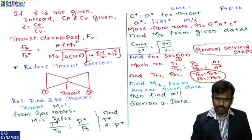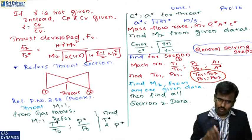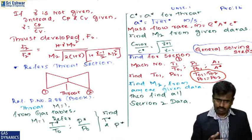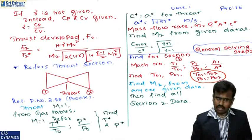If γ is not given, calculate it from γ = cₚ/cᵥ. Thrust developed F₂ can be calculated by: F₂/F* = [(1 + γM₂²)/M₂] · √[2/(γ+1) · (1 + (γ−1)/2 · M₂²)]. The throat section corresponds to M = 1. Using gas tables, find T*/T₀ and other critical ratios for section 1 and section 2.